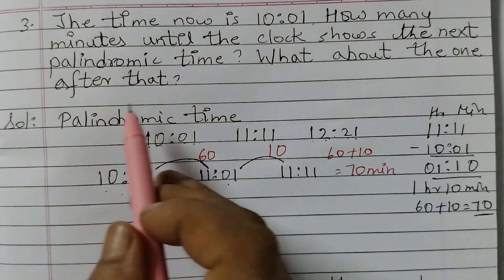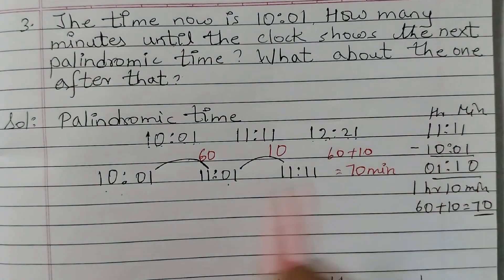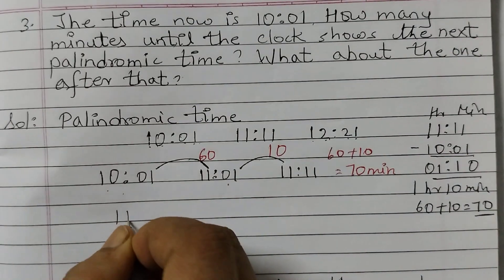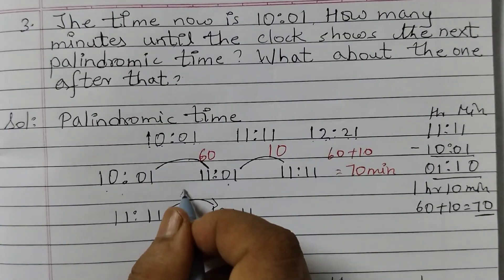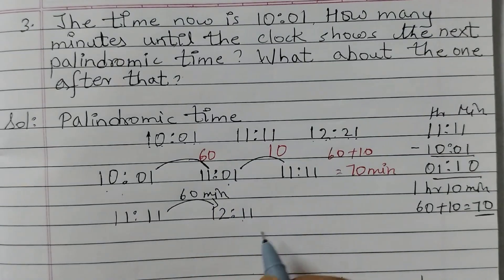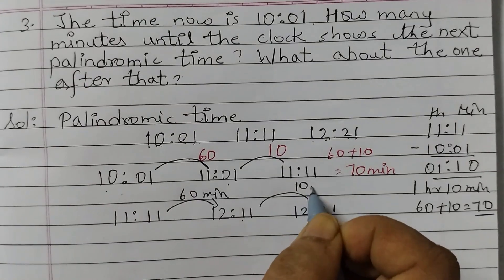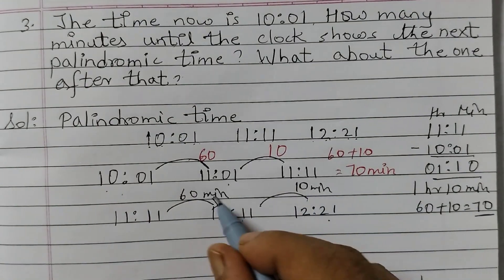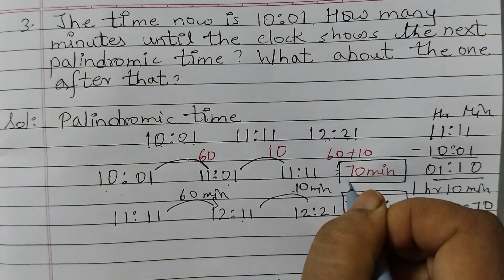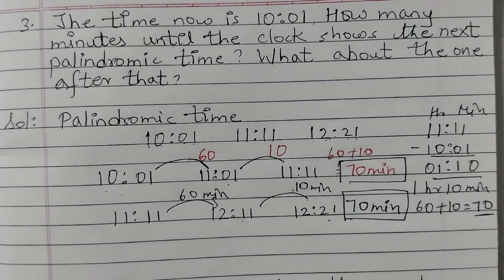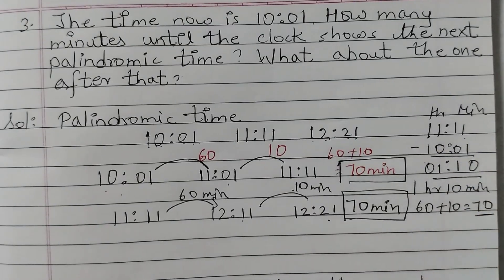For the one after that, we find the difference between 11:11 and 12:21. From 11:11 to 12:11 is 60 minutes, and from 12:11 to 12:21 is 10 minutes, so that is also 60 plus 10 equals 70 minutes. For the first gap we got 70 minutes, and for the second one also 70 minutes. You can also write it as 12:21 minus 11:11 to get the same answer.